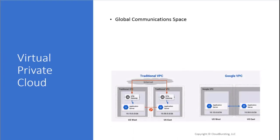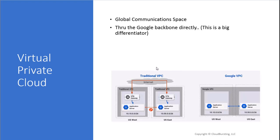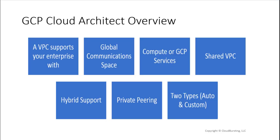This is a global communication space that goes through Google's backbone directly. With traditional competitor clouds, going from US West to US East generally meant leaving the cloud data center and traversing the public internet. With Google's VPC, you stay on Google's well-provisioned network — you're not actually traversing the internet. The performance and security benefits are significant. Compare this to a sandbox of worldwide resources.